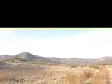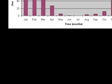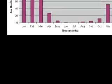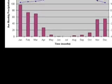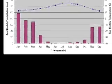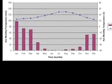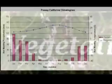Chaparral is known for being very hot and dry. It only gets about 10 to 17 inches of rain all year, and most of it comes in the winter. As for the temperature, the winter is about 10 degrees Celsius, while the summer is very hot and dry at 40 degrees Celsius.